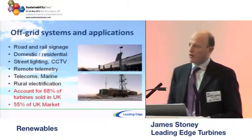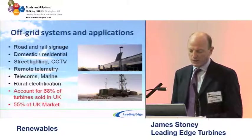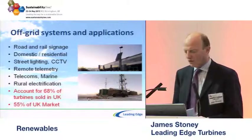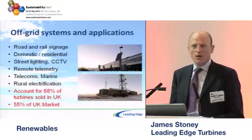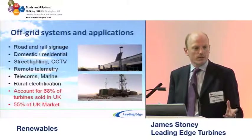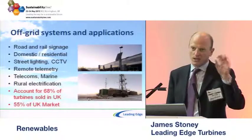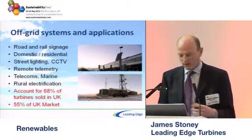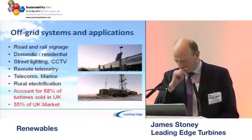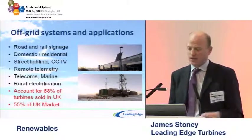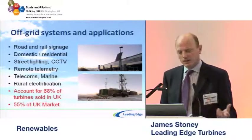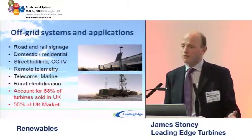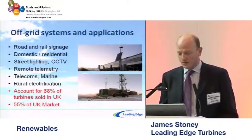Off-grid applications account for about 65% of turbines sold in the UK. These are commonly seen on road signs and rail signs, where power is incredibly expensive to get to. A turbine can pay for itself almost immediately by saving the cost of cabling. In domestic residential applications, if the distribution network operator charges a large amount to connect to the grid, it can be more cost-effective to install a turbine and some solar panels instead.